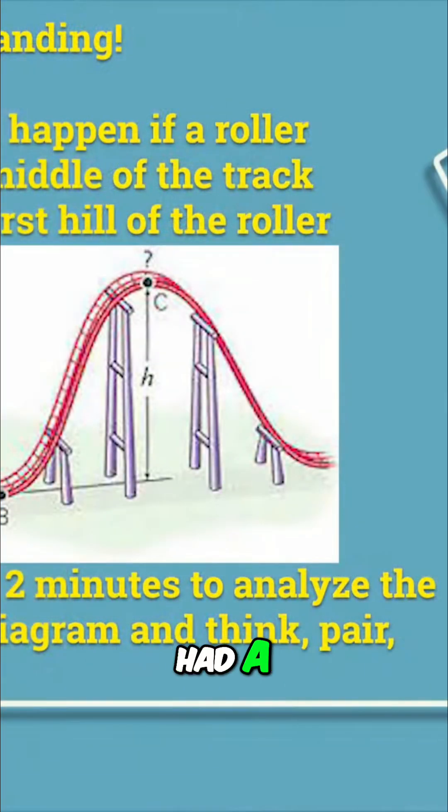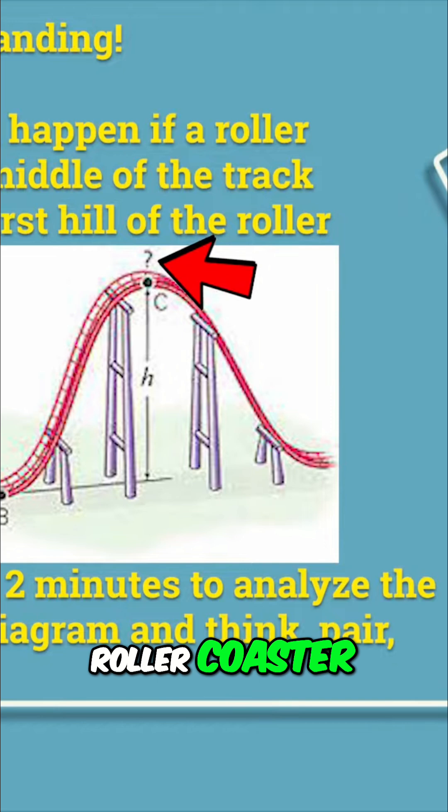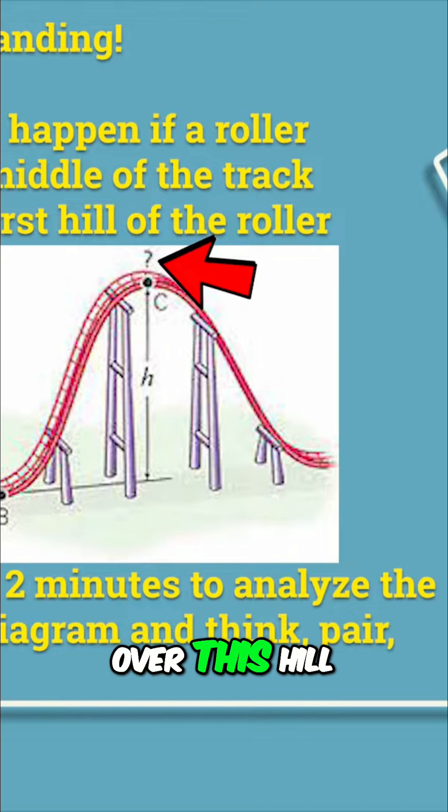What do you think would happen if a roller coaster had a hill in the middle of the track that was taller than the first hill of the roller coaster? Would the cars be able to make it up this bigger hill using just gravity, or would other factors keep you from getting over this hill?